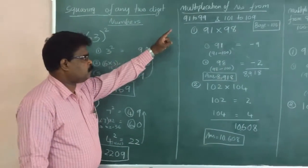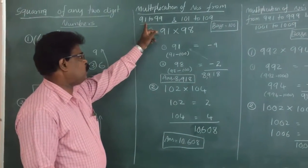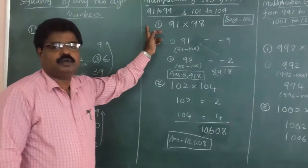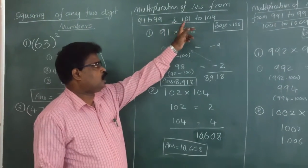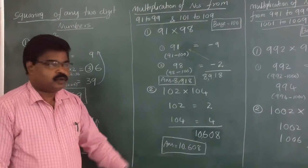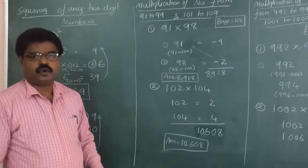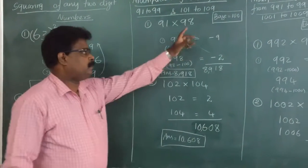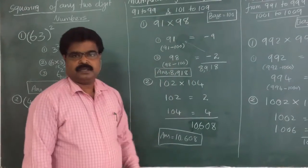Next: multiplication of numbers from 91 to 99 and 101 to 109. This range is near 100, so you take the base as 100.